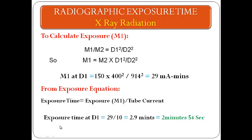Substituting all data into the equations, we first calculate M1 = 29 mA·min at D1. Then dividing M1 by the tube current, the expiry time at D1 = 2 minutes 54 seconds.